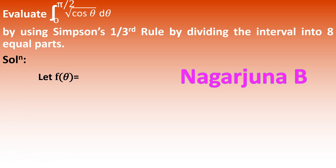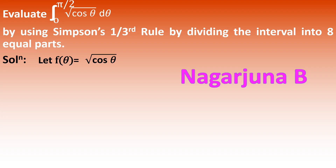Solution: let f(θ) = √(cos θ). In previous cases we considered f(x), but since here they have given θ, we write f(θ) = √(cos θ). Now, the values are: n = 8, b = π/2 (upper limit), and a = 0 (lower limit).